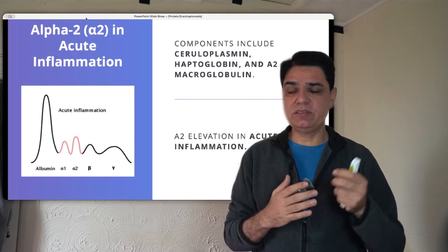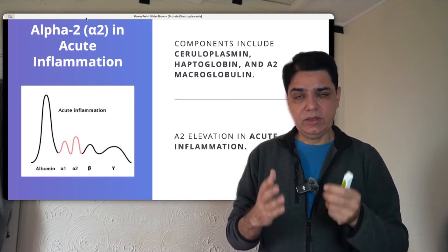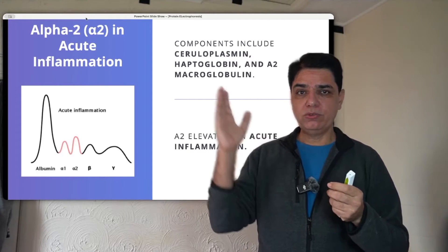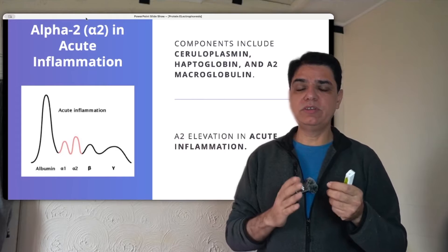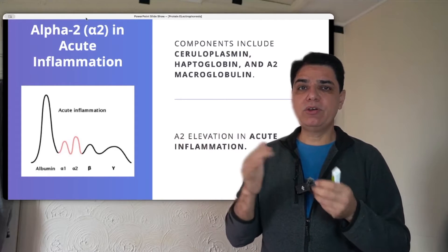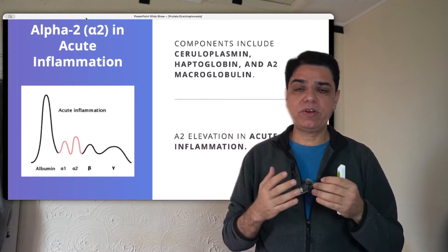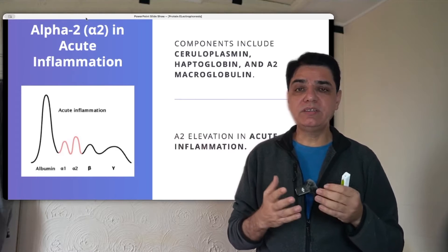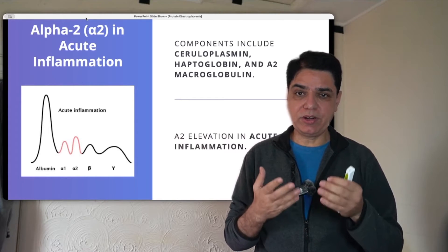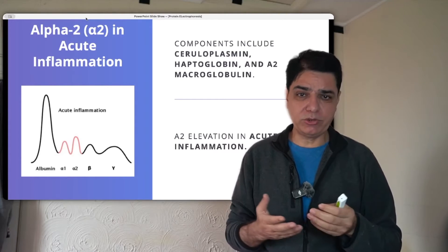Looking at this diagram, you can see there are humps on the alpha-1 and alpha-2 sections of the protein electrophoresis, indicating an inflammatory condition — specifically some form of acute inflammation.